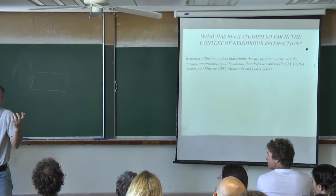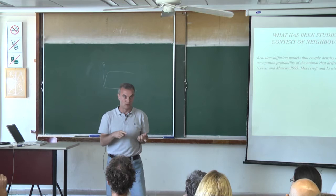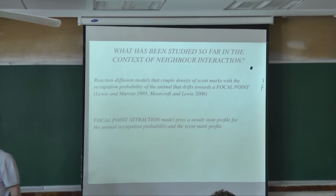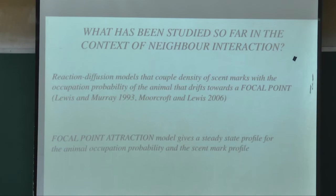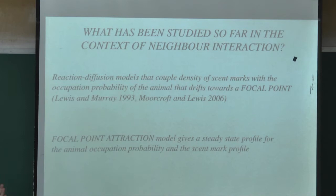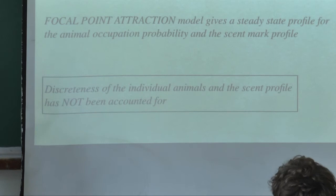We went beyond that work because we really took into account the discreteness of the interaction event. The other important aspect is that Lewis's model uses a focal point — central-place foraging. Foxes, for example, are not central-place foragers. If you don't have a focal point attraction, then you really have a collective aspect, and that's why the box — your territory — is actually moving around.